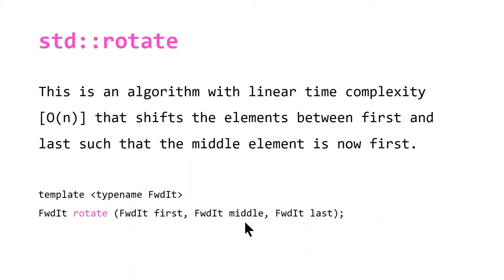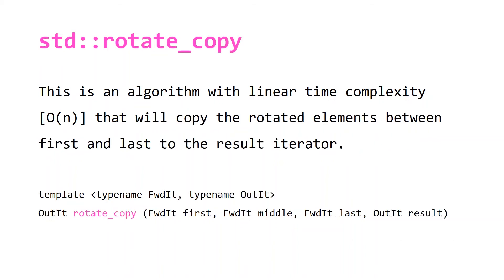Similar to reverse_copy, rotate_copy is an algorithm with linear time complexity that will copy the rotated elements between first and last to the result iterator.